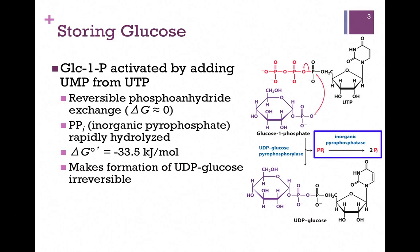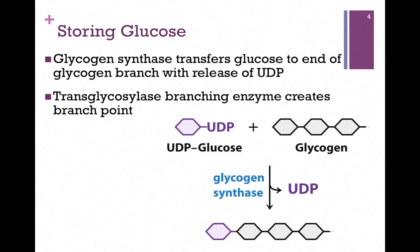UDP-glucose is our end product — charged up with stored energy — and we can use that to form our polymer. The enzyme glycogen synthase catalyzes the addition of that glucose unit to the end of the chain, transferring glucose with the release of UDP. A separate enzyme, a transglycosylase, is needed to create the branch points.